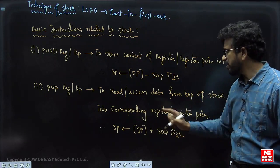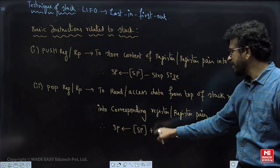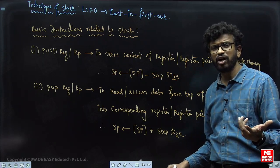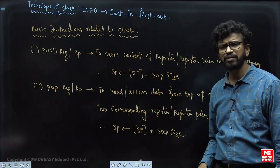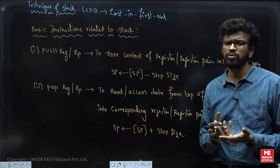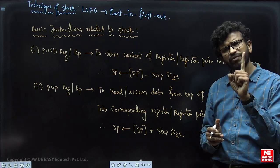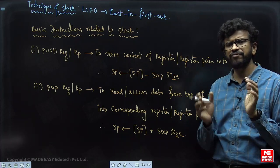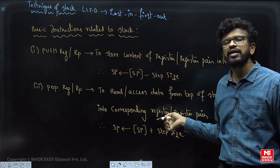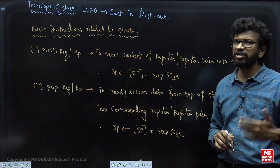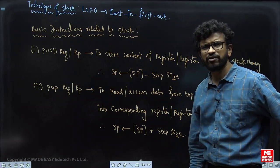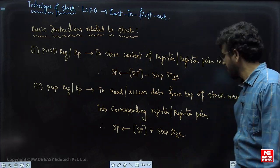Step size depends on the word length of memory. For byte-addressable memory, step size is 1. If each word has two bytes, step size is 2. For a 32-bit processor where each word is 4 bytes, step size is 4. Depending on the type of memory considered, the step size will change. These are the basic concepts required to understand the given question.